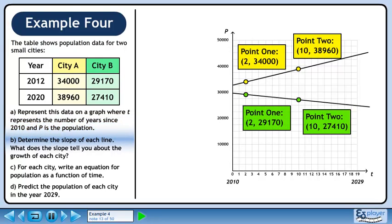Now we'll move on to part B. Determine the slope of each line. What does the slope tell you about the growth of each city? Let's calculate the slope for city A.